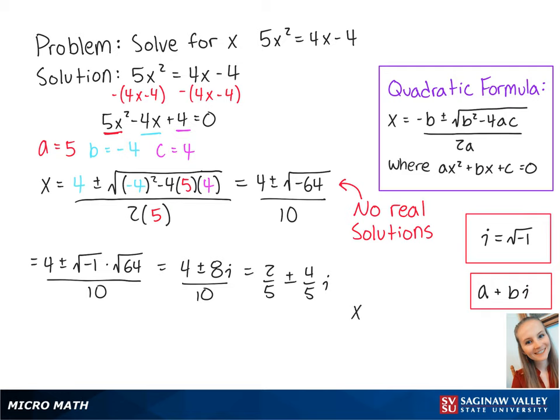So we have x equals 2 fifths plus 4 fifths i or 2 fifths minus 4 fifths i. This is the final answer.